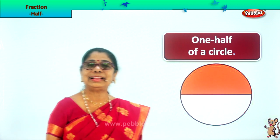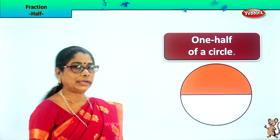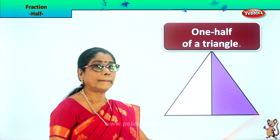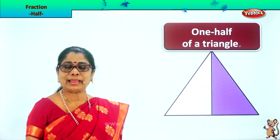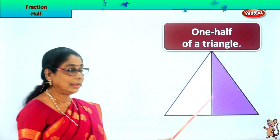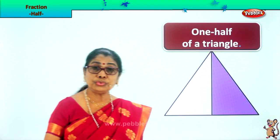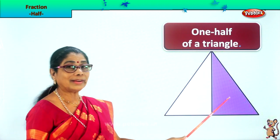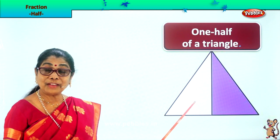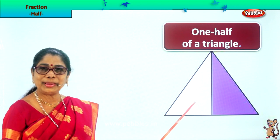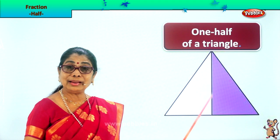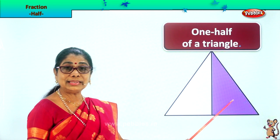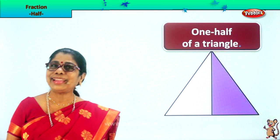Let's take another shape. Here we have a triangle — a big whole triangle. We can divide the whole triangle into two equal halves. So this is one half of a triangle, and this is one half of a triangle. One by two, one by two. So the whole triangle we have divided into two equal halves, and this is one half of a triangle.